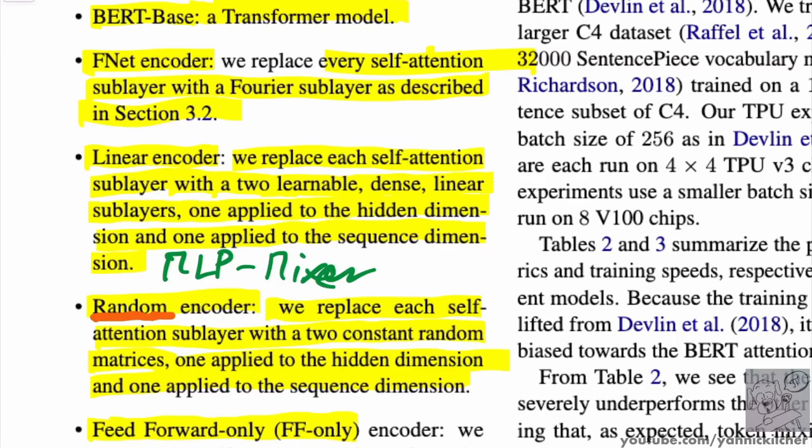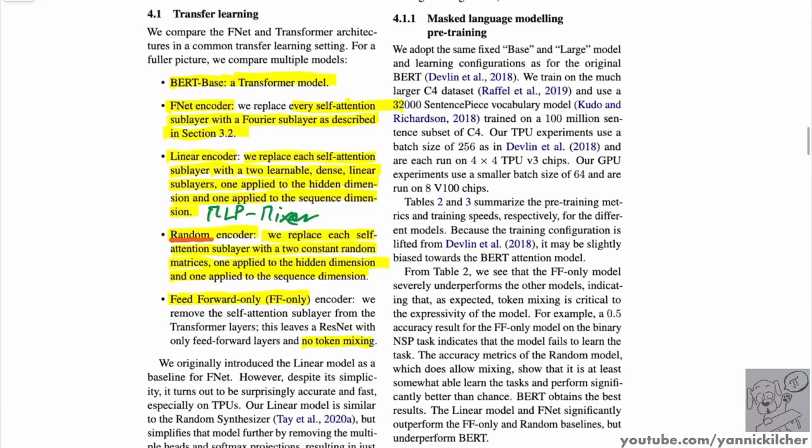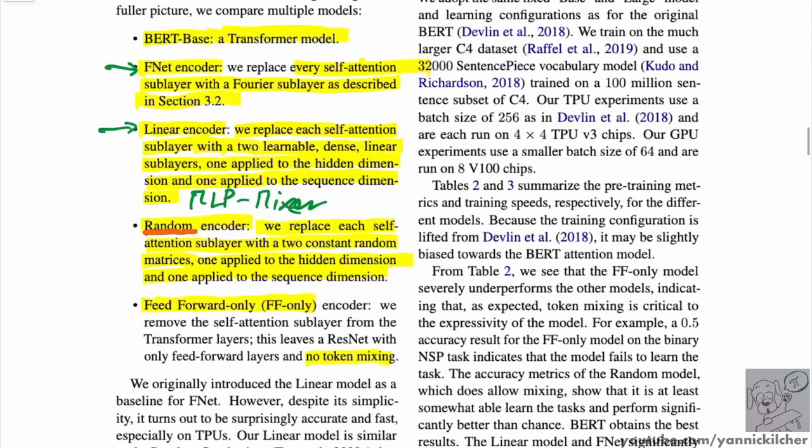There's no token mixing. As you can see here, the linear encoder - we replace each self-attention sub-layer with two learnable dense linear sub-layers, one applied to the hidden dimension, and one applied to the sequence dimension. This is the MLP mixer. Now I get it, MLP mixer was specifically for vision. People might have tried this before - not saying they invented this particular thing. But this is exactly like - it's funny that this appears again, right here. In fact, when you look at the results, this linear encoder performs quite well.